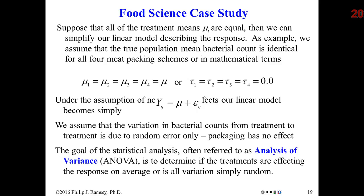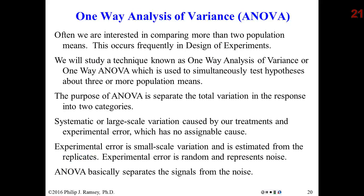Under the null hypothesis, there are no real differences in average response between the treatment levels — that is, all levels have exactly the same mean, which equivalently means all of the tau's are zero. How we determine if this hypothesis is true or invalid is through analysis of variance.